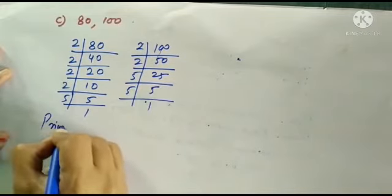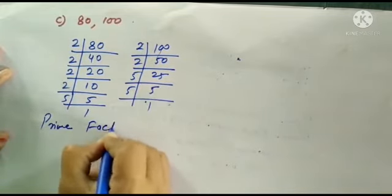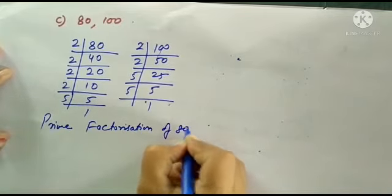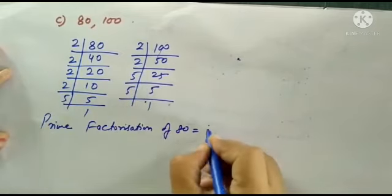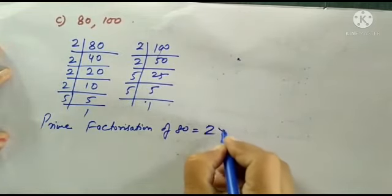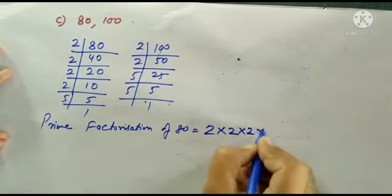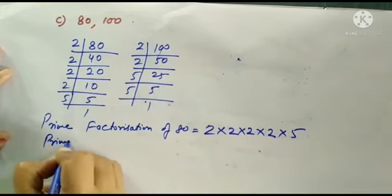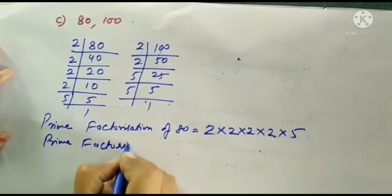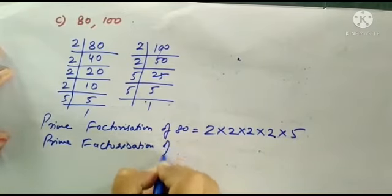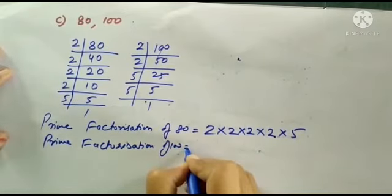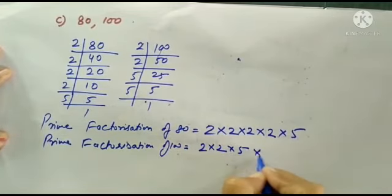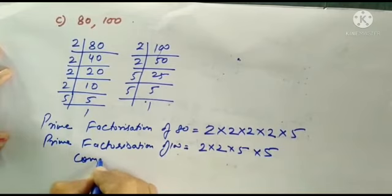Now we have to find prime factorization. Prime factorization of 80 is 2 times 2 times 2 times 2, so 4 times 2, multiplied by 5. And prime factorization of 100 is 2 multiplied by 2 multiplied by 5 multiplied by 5.